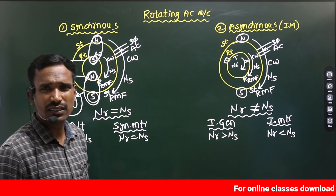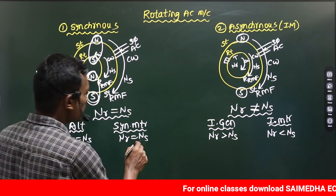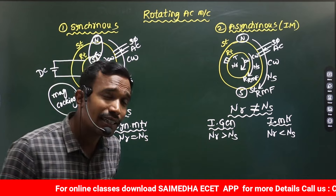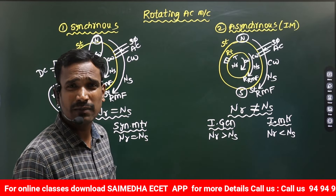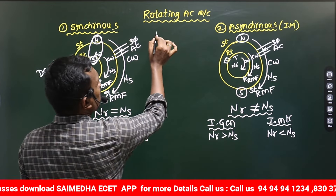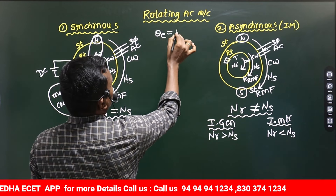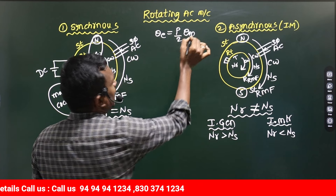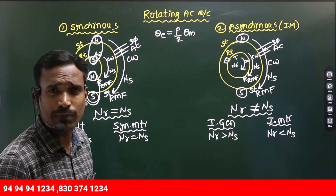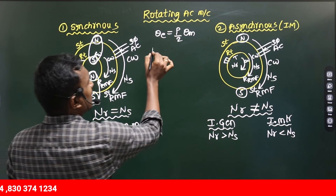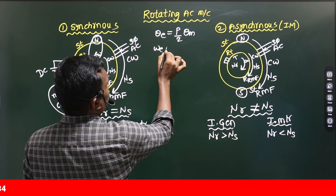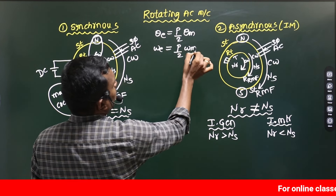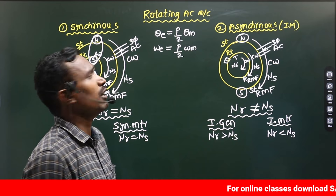This is the main difference. What is Synchronous speed actually? It is the speed of the stator magnetic field. How do we calculate it? We have a basic formula: theta_electrical equals P/2 times theta_mechanical. Writing in terms of omega: omega_electrical equals (P/2) times omega_mechanical.